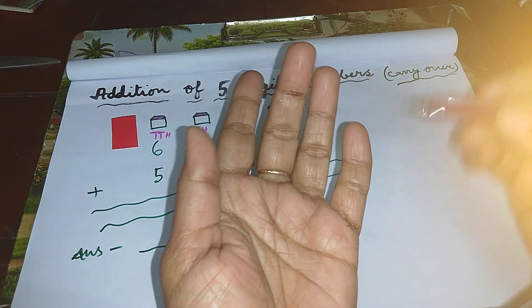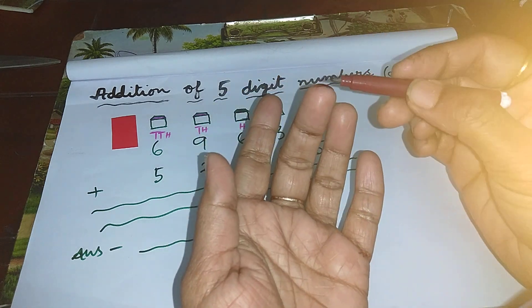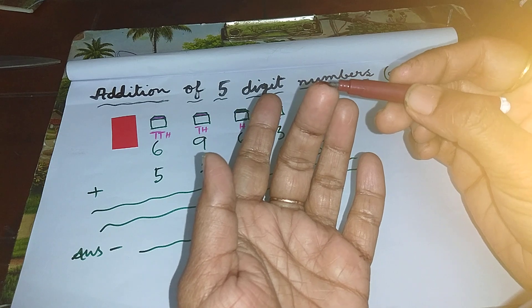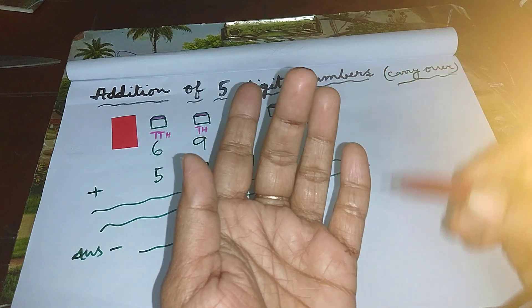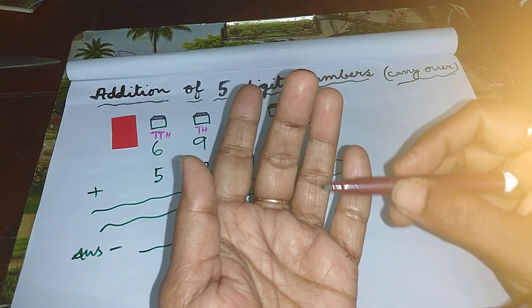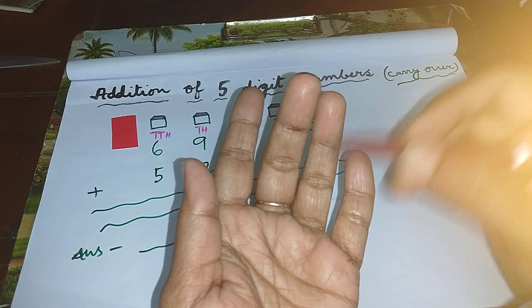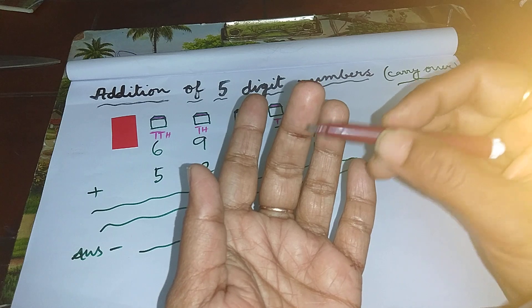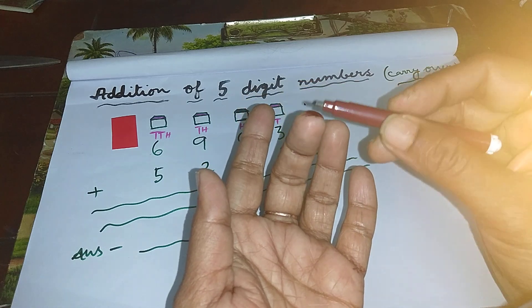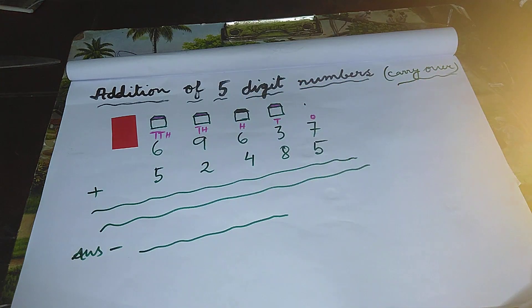From here to here, total how many lines are there in all? One, two, three, four, five, six, seven, eight, nine, ten, eleven, twelve. Twelve.